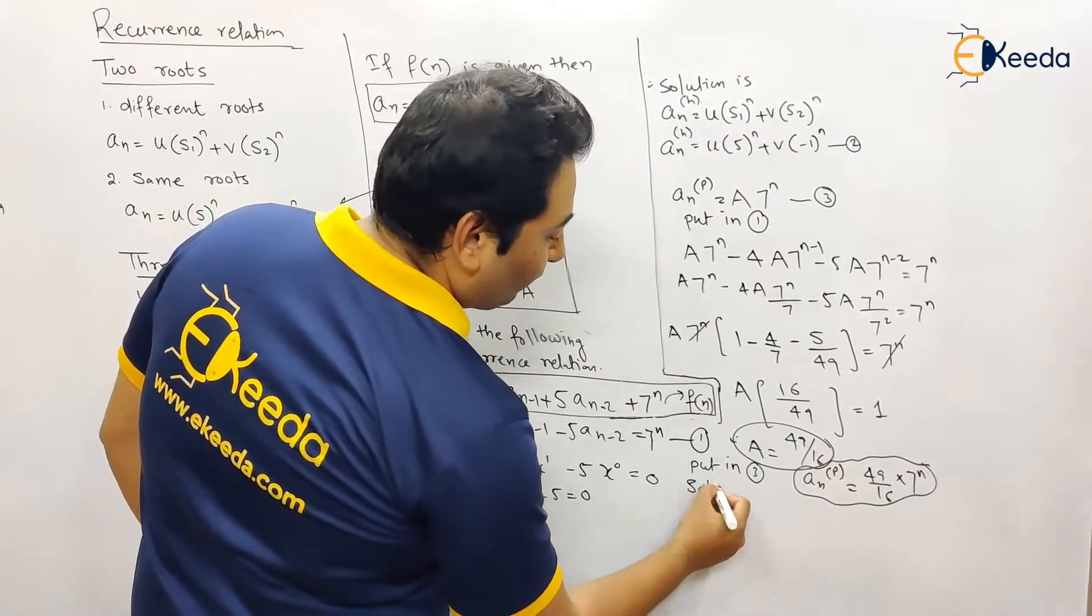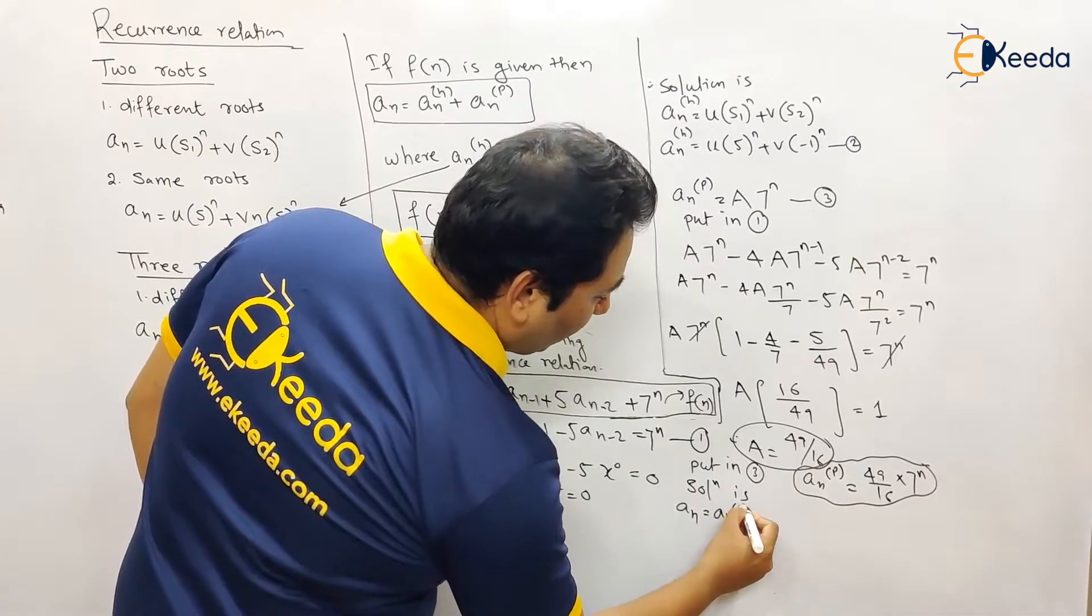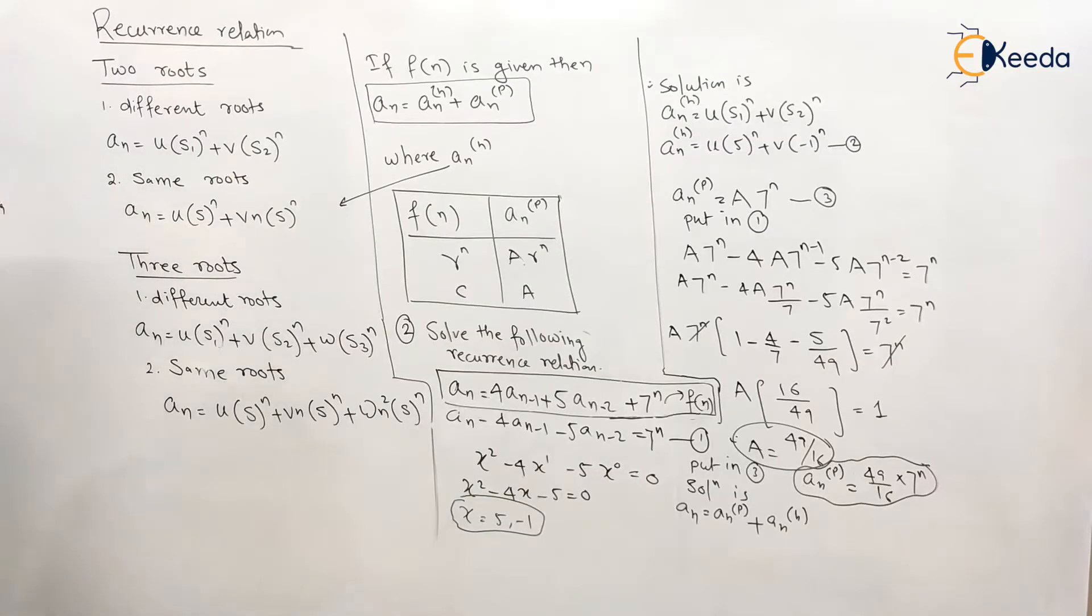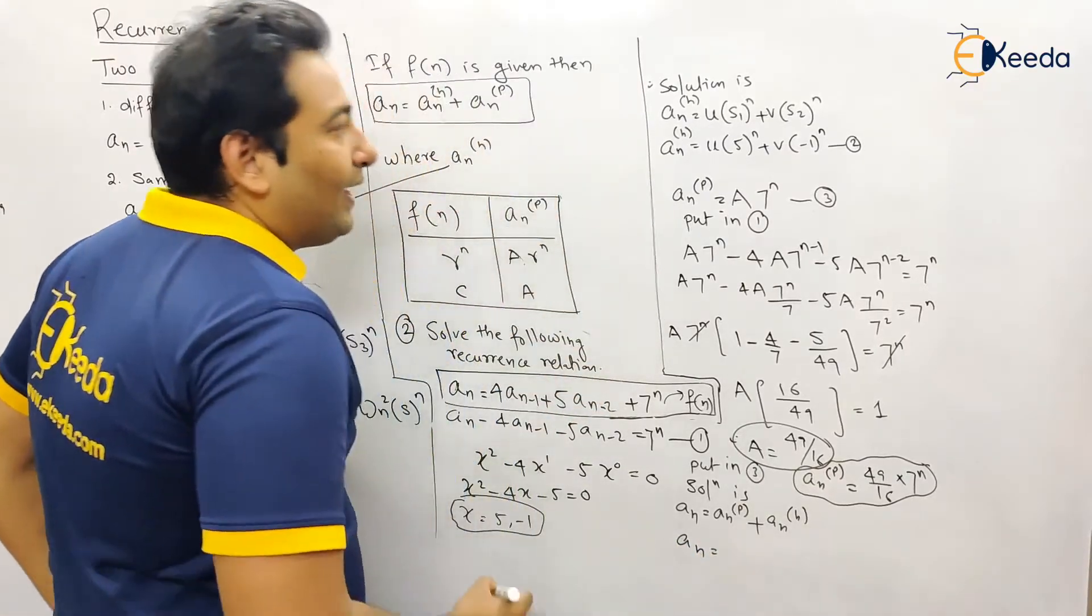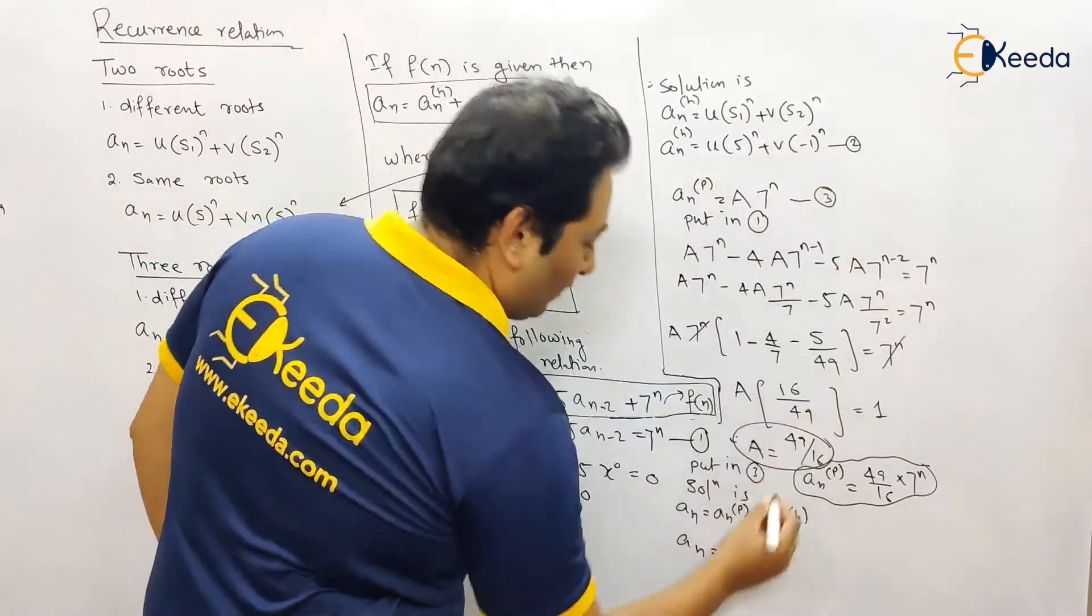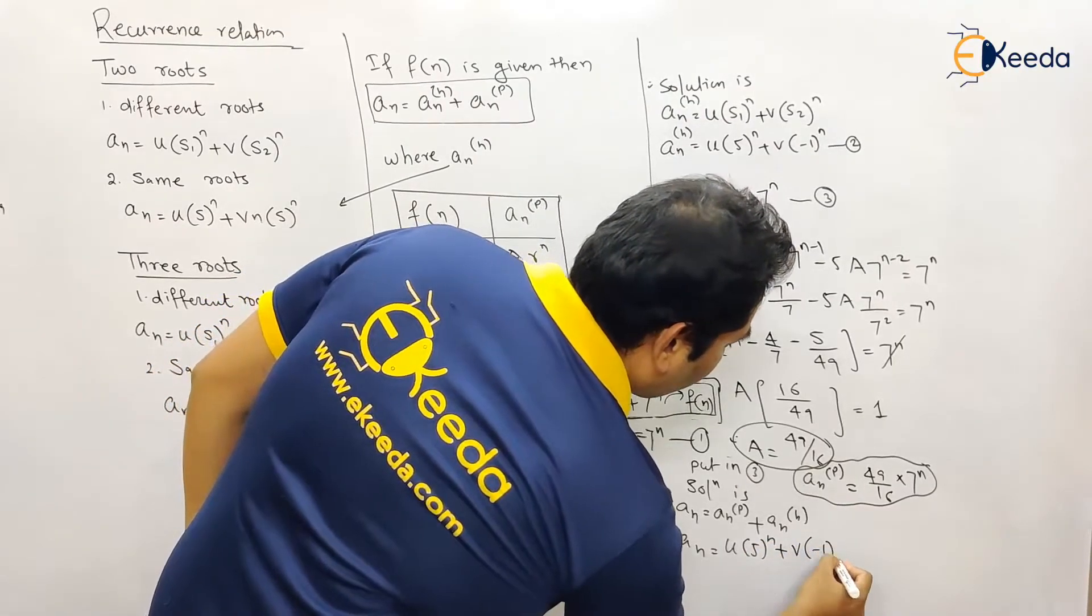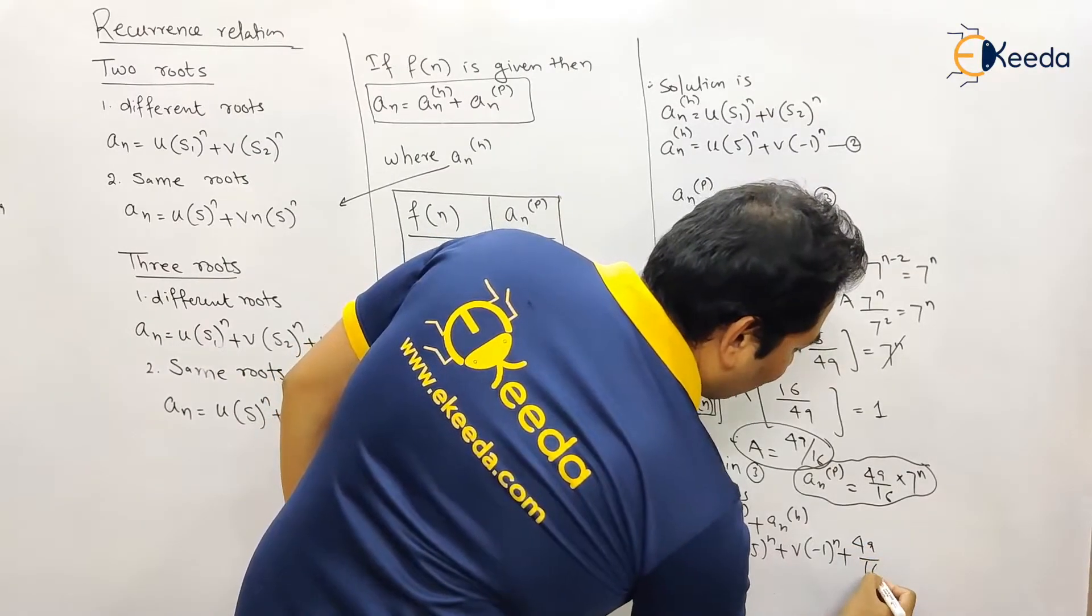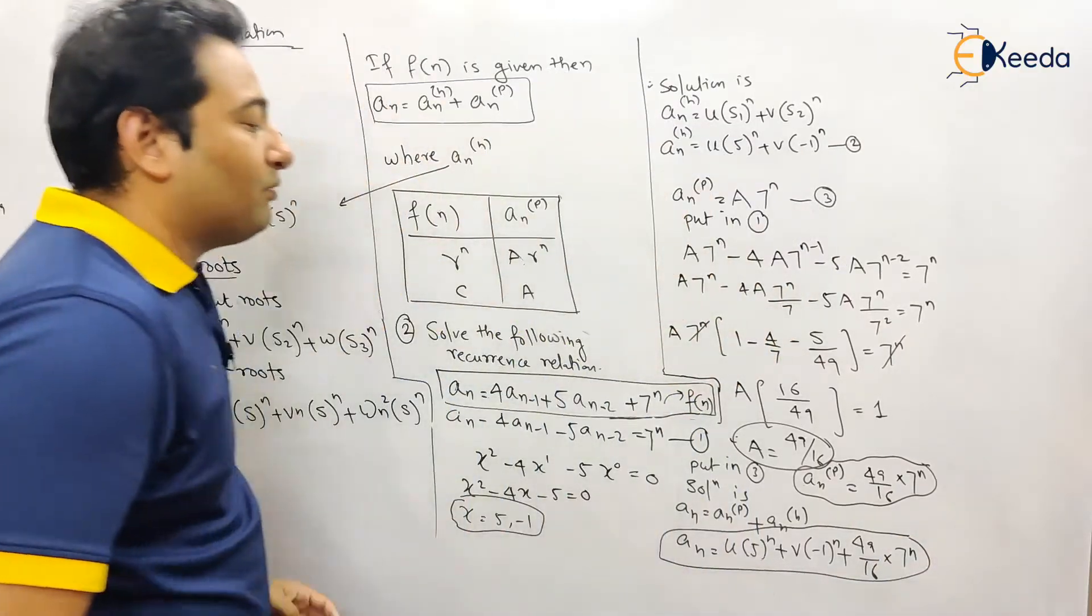So what is the final solution? a_n is equal to a_np plus a_nh, or a_nh plus a_np. So let us put in the particular expression. a_nh is this: u·5 raised to n plus v·(-1) raised to n plus a_np. So that is 49 by 16 into seven raised to n. So this is your required solution for this particular problem.